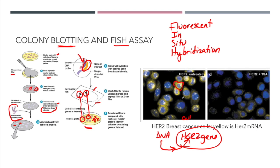They were doing this in-situ hybridization because they then took this same cell culture and treated it with a compound called TSA. After treatment with TSA, you can see how much less these cells glow — there's much less RNA, which means that gene is being turned off. This molecule or drug is capable of shutting off that HER2 gene so it does not express as much. You can see there's a big difference between the two.